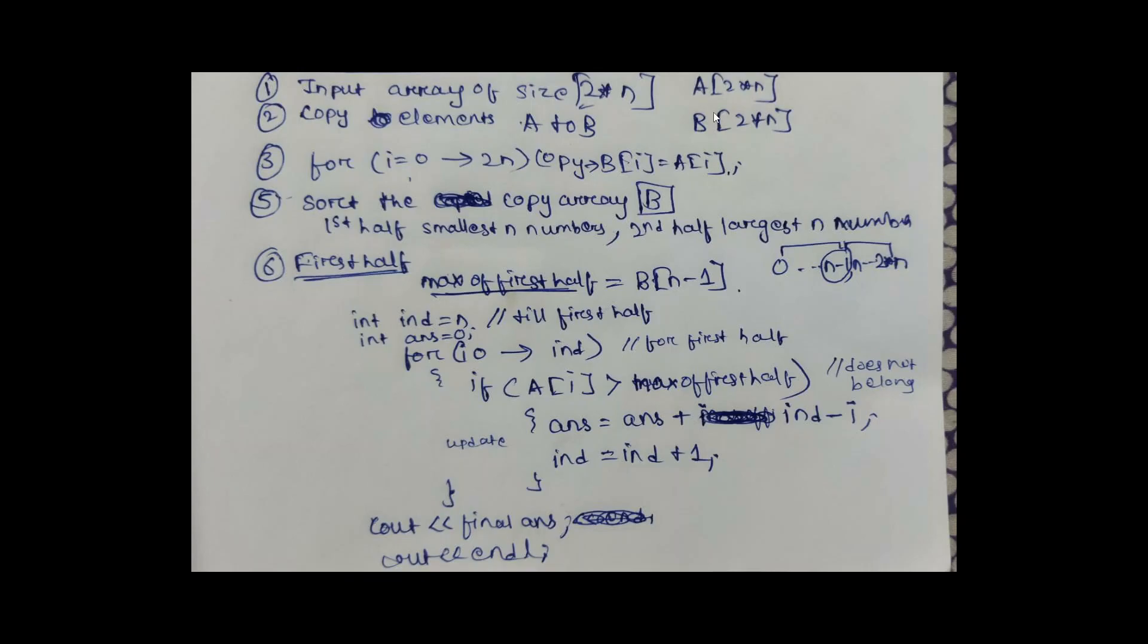Then copy all the elements of the first array A into B of the same size 2N. After copying the elements of A into B, we sort the copied array B. After sorting, we will get the first half of smallest N numbers and the second half of largest N numbers.